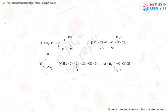In question number 11.3, name the following compounds according to the IUPAC system. We are starting with the first one. Here, first of all, you have to select the longest carbon chain.